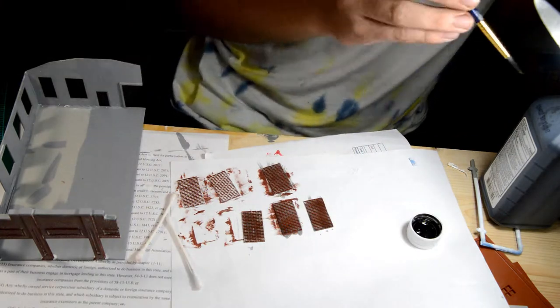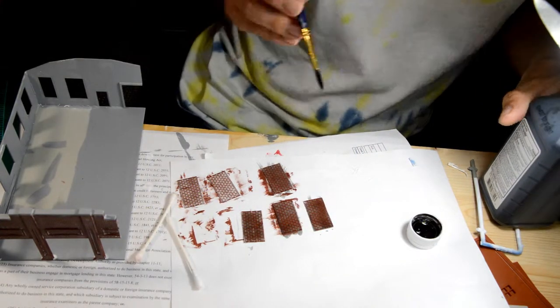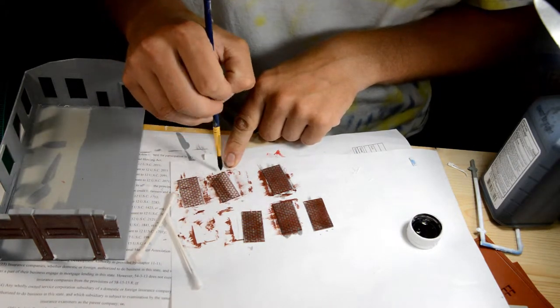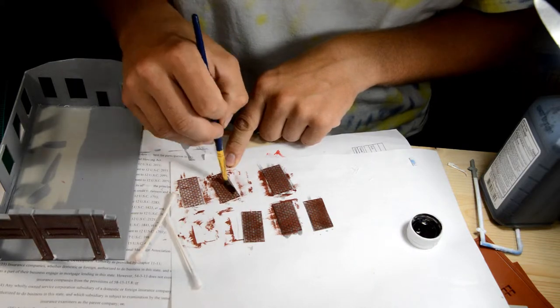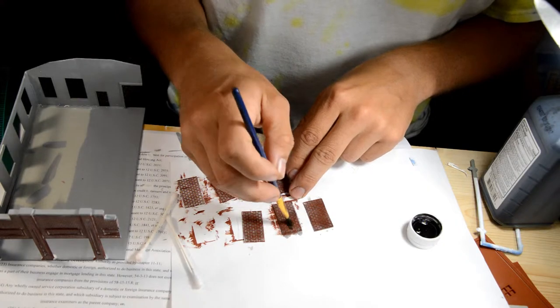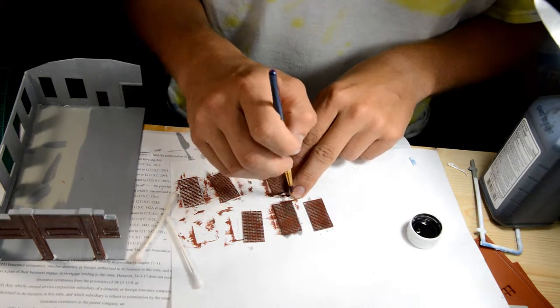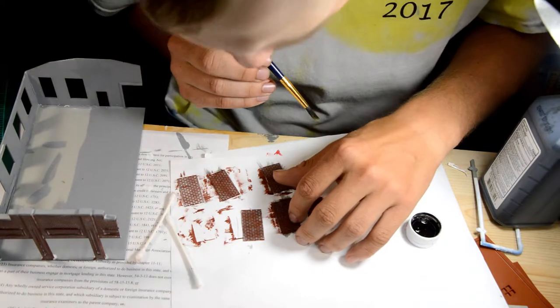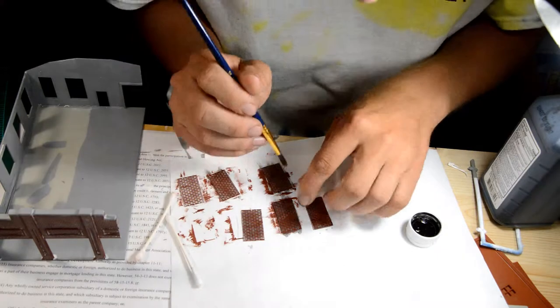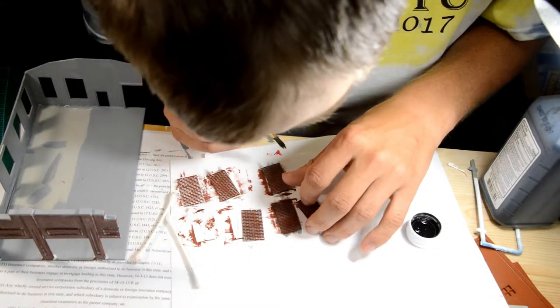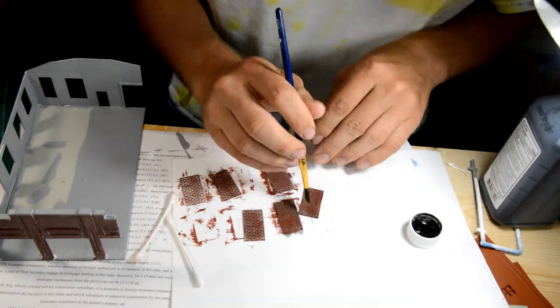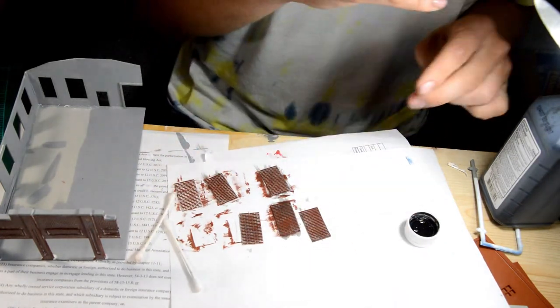So you can use different amounts of rubbing alcohol or you can use different amounts of how much India ink you put in with the rubbing alcohol to get different effects. I have, I just got the one, which is sort of a compromise. Your darker stuff is going to be around, got a little something there, I don't know what it was.